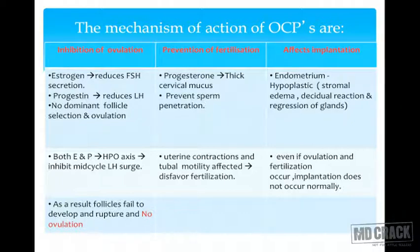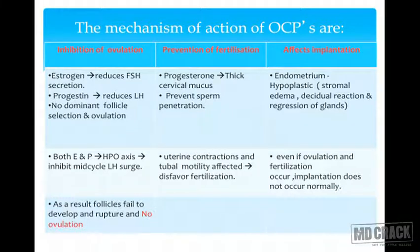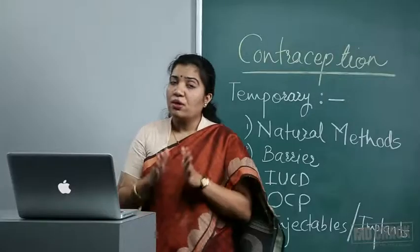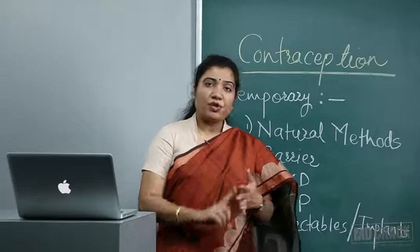Prevention of fertilization: a thick cervical mucus plug forms, which is hostile to sperms and inhibits fertilization. Uterine and tubal contractions are also modified to disfavor fertilization. Prevention of implantation: because of the actions of estrogen and progesterone, the endometrium becomes either hyper-proliferative, hyper-secretory, or atrophic — out of phase with fertilization and not suitable for nidation. Thus OCPs act at all three levels.